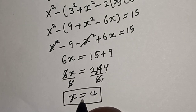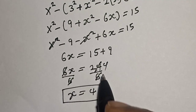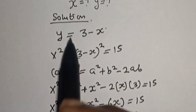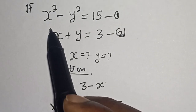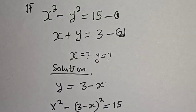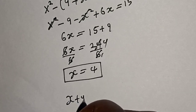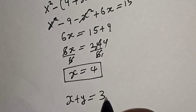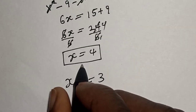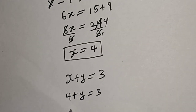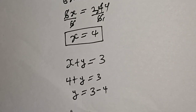Now we have gotten the value of s, which is equal to 4. Let's solve for the value of y. To solve for y, let's use equation 2: s plus y is equal to 3. Since s is 4, we have 4 plus y is equal to 3, so y is equal to 3 minus 4, which gives y is equal to minus 1.